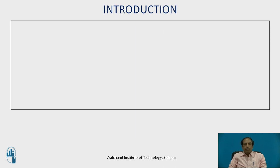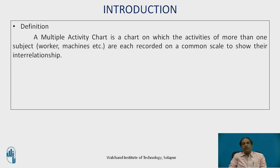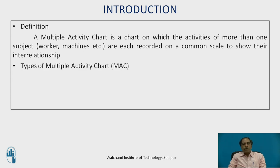A multiple activity chart is a chart on which the activities of more than one subject — worker or machine — are each recorded on a common scale to show their interrelationship. It is one of the recording techniques in method study. Recording techniques are generally classified into two categories: charts on a time scale and charts without a time scale. The multiple activity chart is a chart with a time scale.